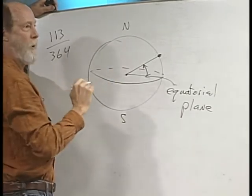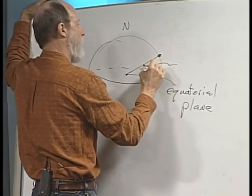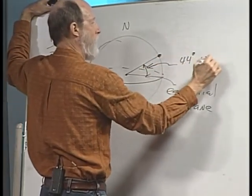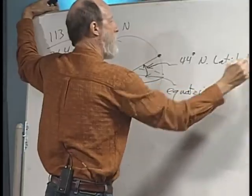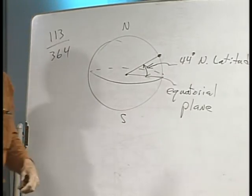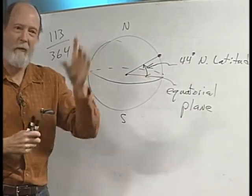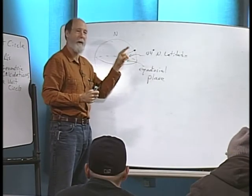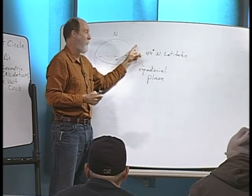Here in Eugene, Oregon we're around 44 degrees north latitude. If you drive up the freeway heading north on I-5 and go past Salem, just past Salem you'll see a sign along the road that says you're halfway to the north pole, or you're at 45 degrees north latitude.